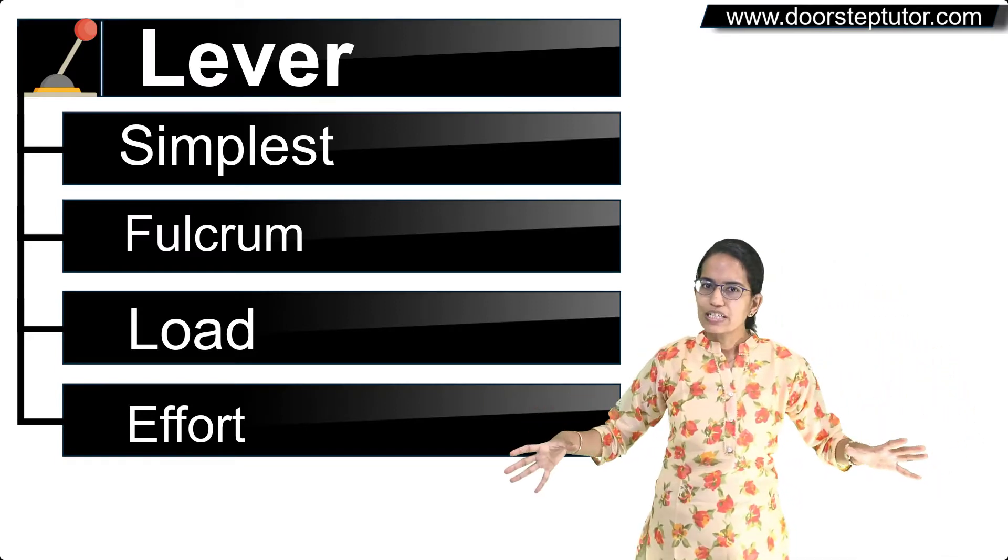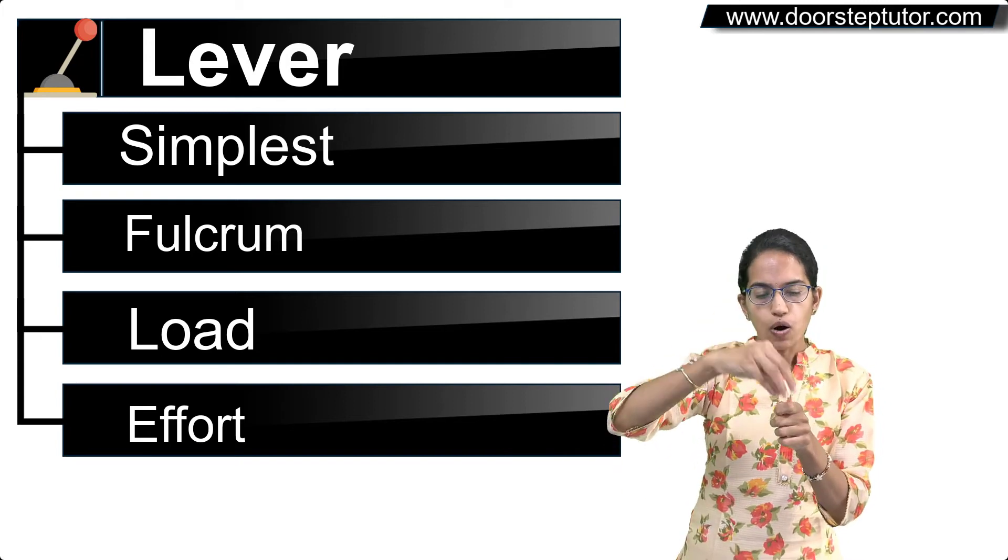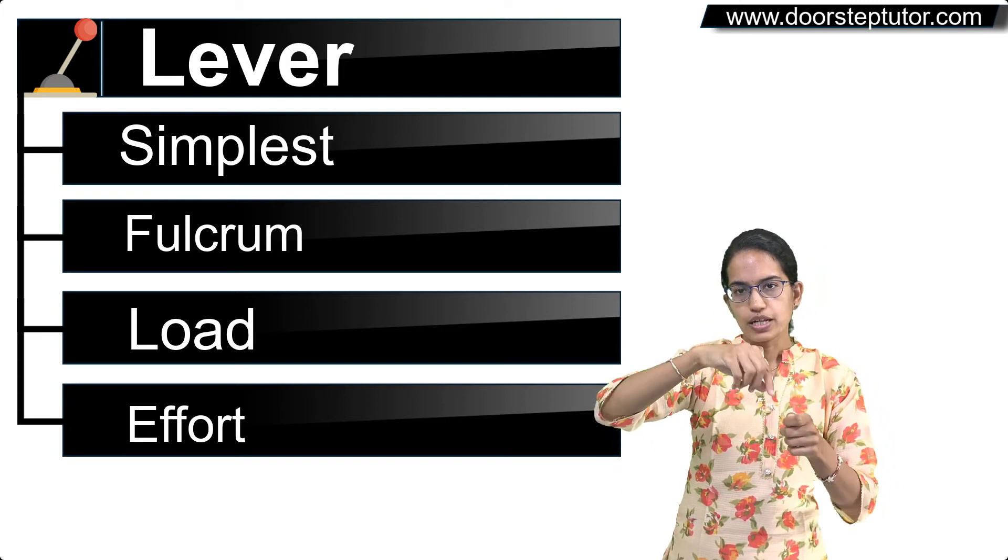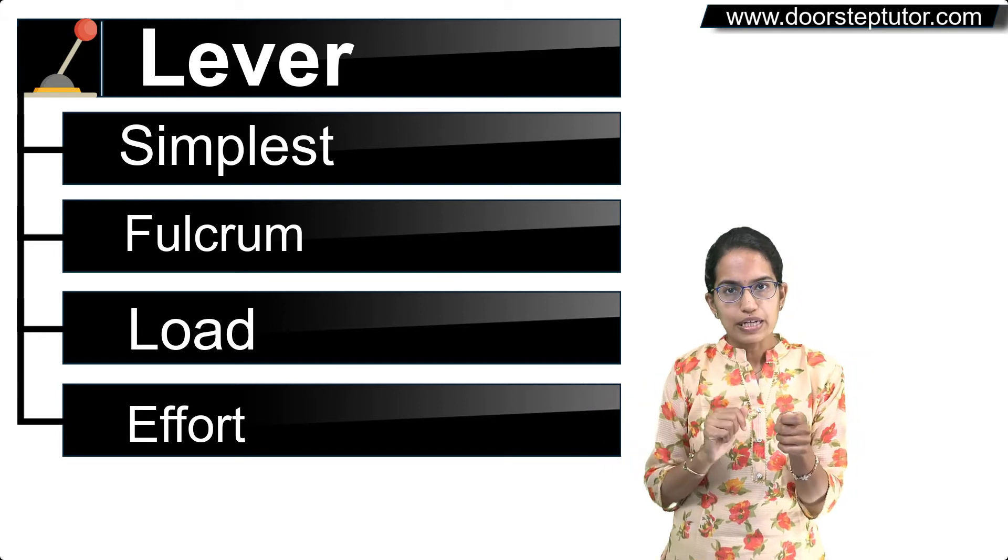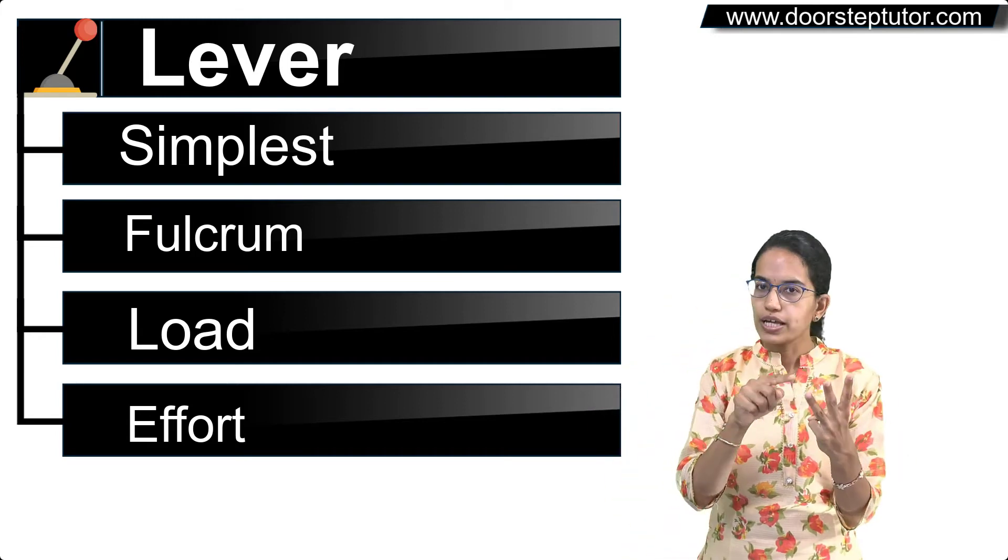To summarize again, a lever is one of the simplest machines where you have one center point or the rigid point along which the movement takes place. So three important terms: fulcrum, load, and effort.